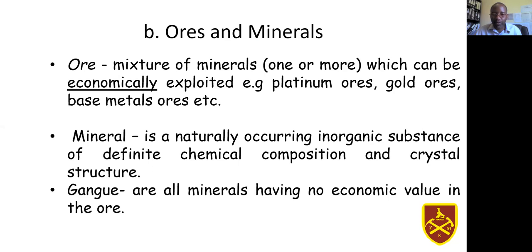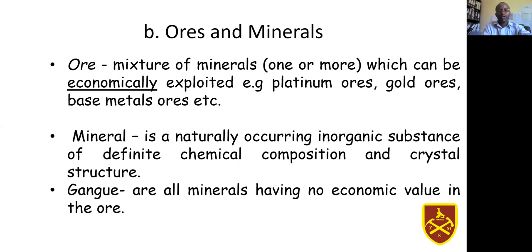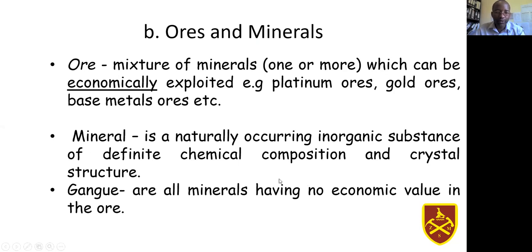That is the mineral. For it to be called a mineral, there must be a certain ratio of atoms combined. If you have one atom of sulfur and another mineral has two sulfur atoms, it means it is a totally different mineral. So a mineral should have a definite chemical composition and a definite crystal structure. Gangue minerals are those minerals which are unwanted when you are doing your processing — they are the uneconomic minerals in your ores.